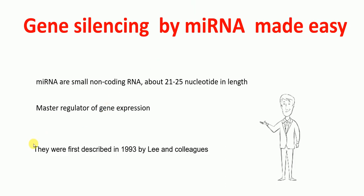These micro RNAs were first described in 1993 by Lee and colleagues. So the synopsis is that micro RNAs are small endogenous non-coding RNAs, about 21 to 25 nucleotides in length, which are master regulators of gene expression. Now I'm going to talk about the biogenesis of micro RNA — how micro RNAs are derived.